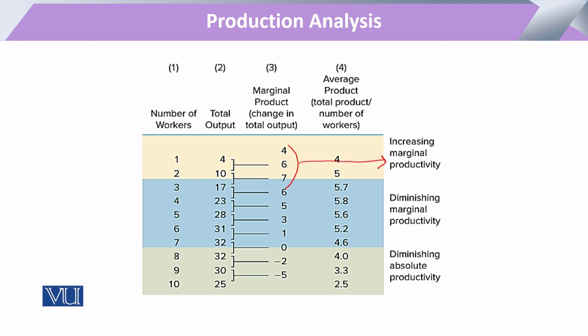Marginal productivity is increasing at first, and then there is a part where from a certain point — say unit 7 — it is going to decline and decline until it reaches zero. So this is the diminishing marginal productivity.